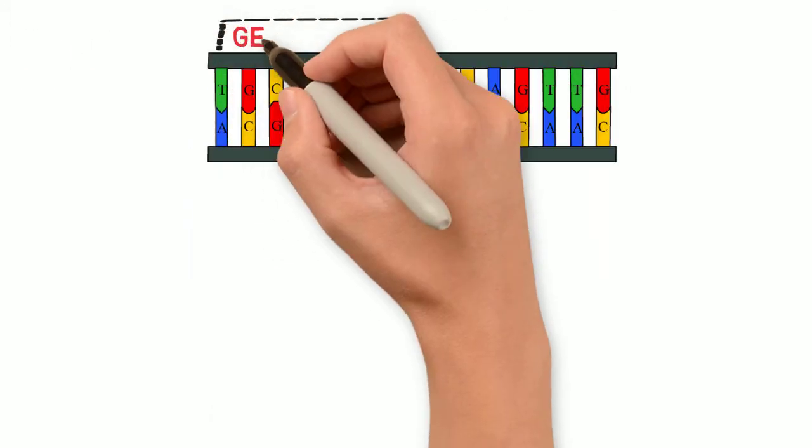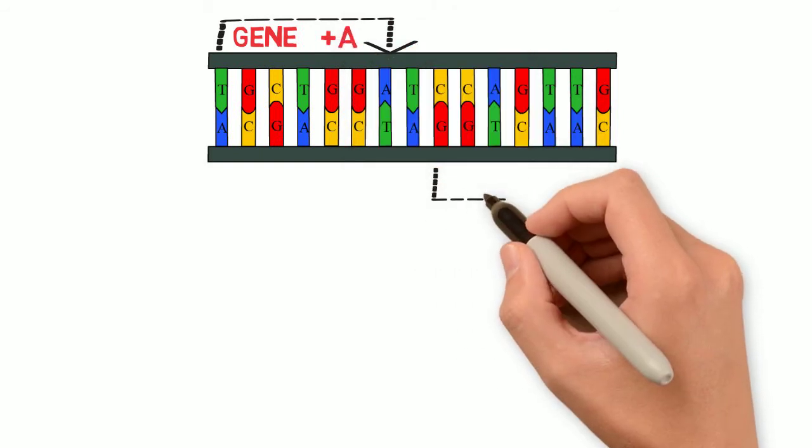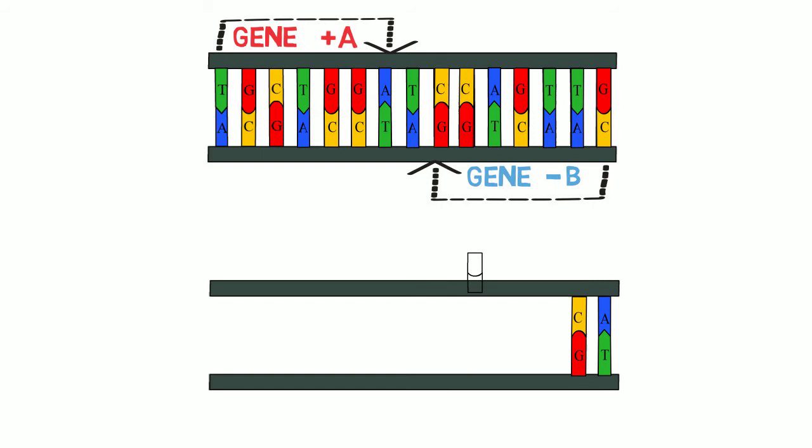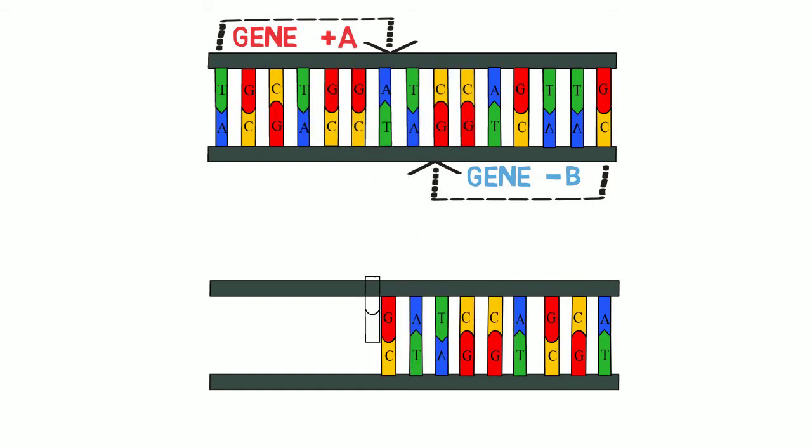In other words, if an inversion affects a segment of DNA containing multiple genes, the genes will then appear in the reverse order, and they will appear on the opposite strand, which also means in the opposite direction.